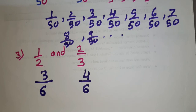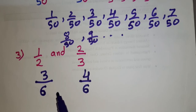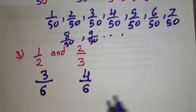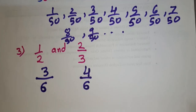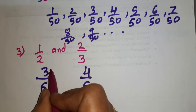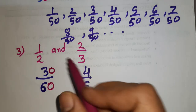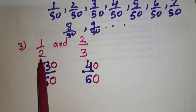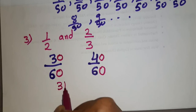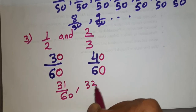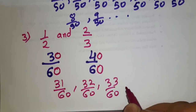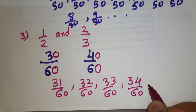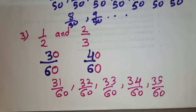Now between 3 by 6 and 4 by 6, we still cannot find a rational number by just looking between 3 and 4. So we increase the denominator again by multiplying by 10: we get 30 upon 60 and 40 upon 60. To find, say, 5 rational numbers between 1 by 2 and 2 by 3, we write 31 upon 60, 32 upon 60, 33 upon 60, 34 upon 60, 35 upon 60 — and this continues up to 39 upon 60.